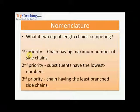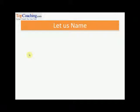Now, what if equal-length chains compete? If there is a substituent chain as long as the main chain, the straight chain gets first priority. Then the chain having the maximum number of side chains is preferred. After that, substituents should have the lowest numbers, and finally the least branched chain should be considered as the longest chain.